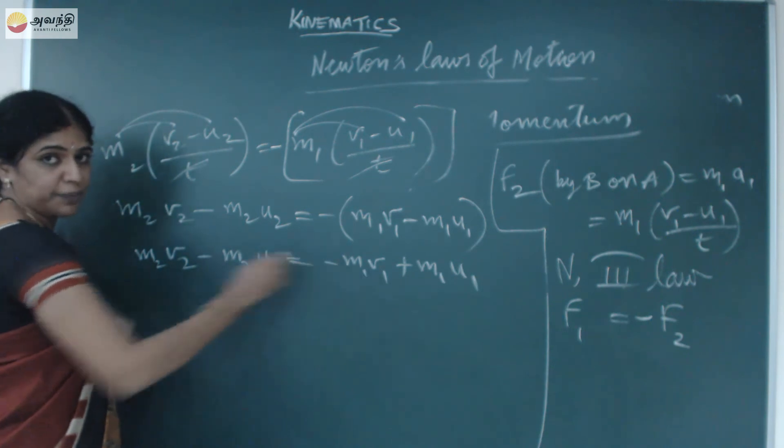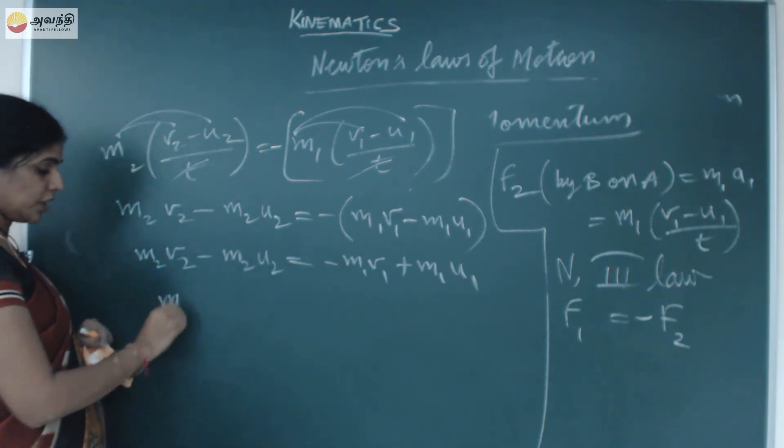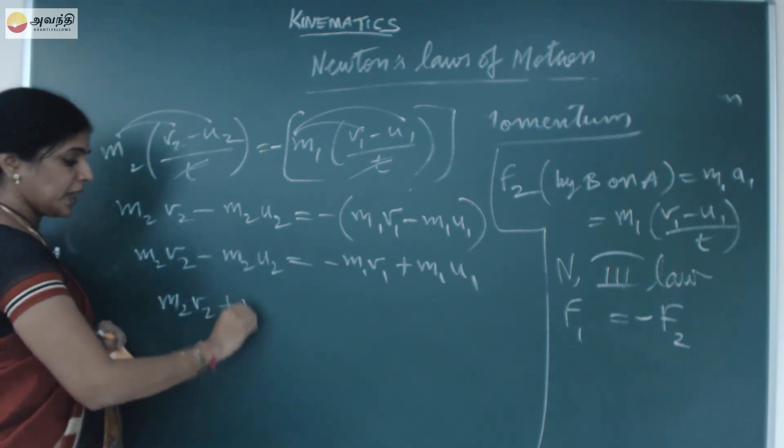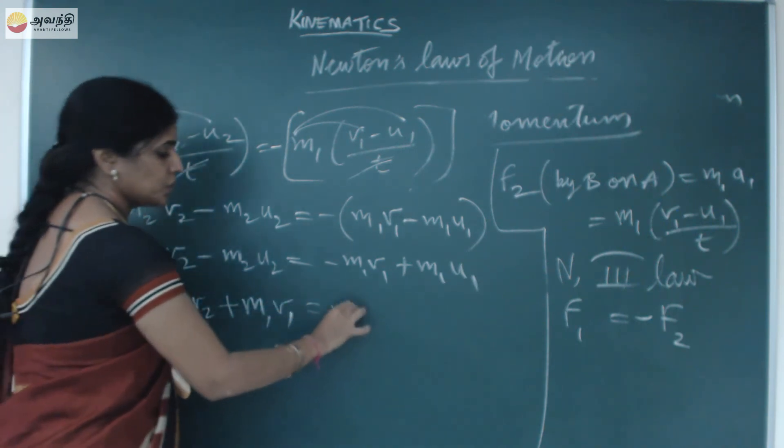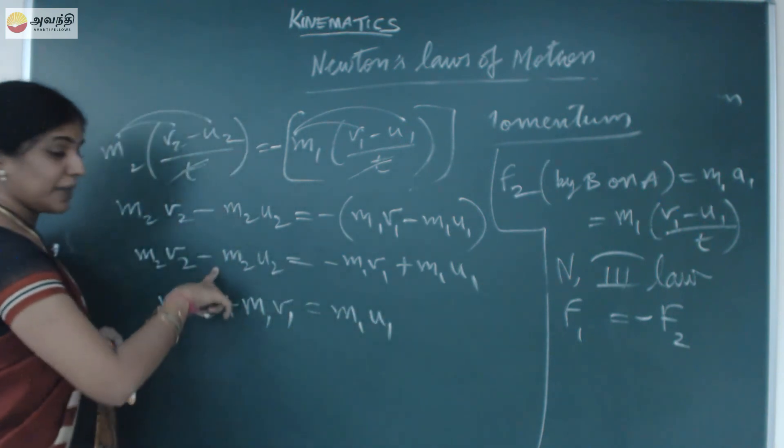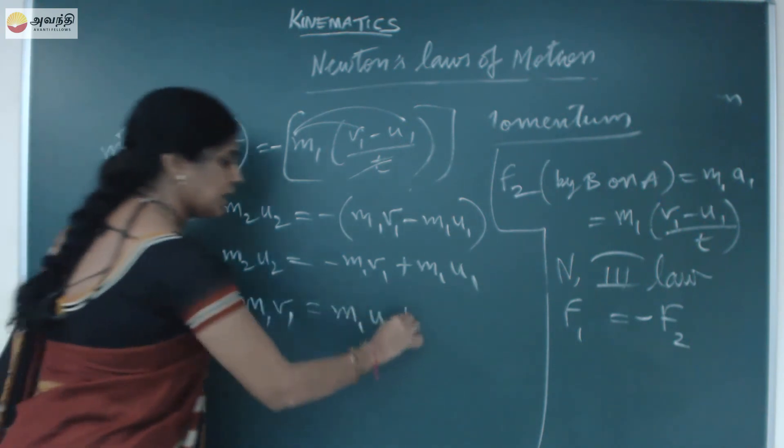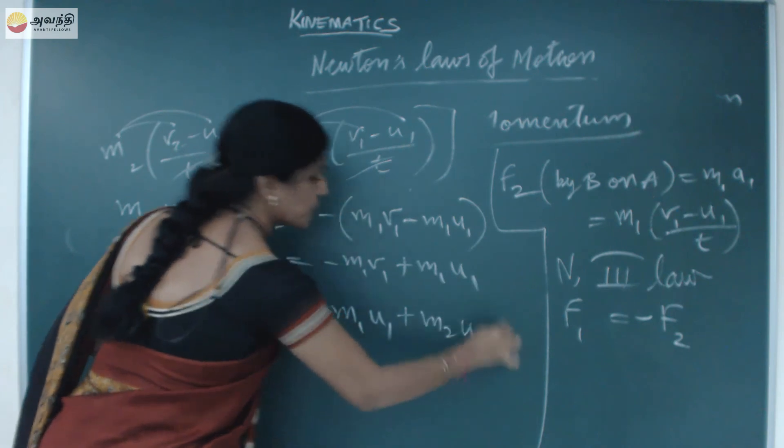So m2 v2 plus m1 v1 on this side. v1, v2 minus m2 u2 plus m1 u1.